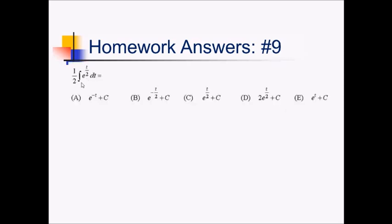On this problem, we have one-half times the antiderivative of e to the t over 2 dt. Normally, the antiderivative of e to the t would just be e to the t. But, because we have a linear inner function here, we have to divide by the derivative of t over 2, which is one-half. If we're dividing by one-half, we're actually multiplying by 2. So, we're going to have the one-half out here times 2e to the t over 2. The one-half and the 2 cancel, so we just have e to the t over 2, plus c, which gives us answer choice C.